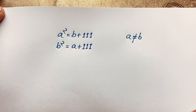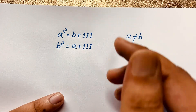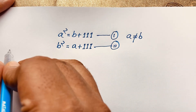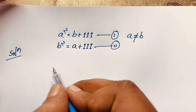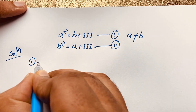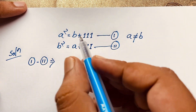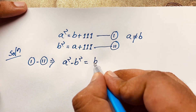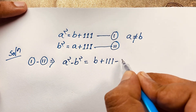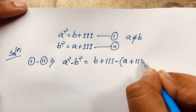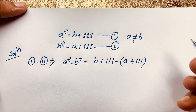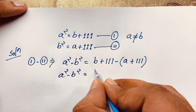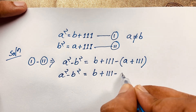So how do we solve this interesting math question? This is our first equation and this is our second equation. For our solution, first of all I subtract both equations — first equation minus second equation. So if I subtract both equations, it will be a squared minus b squared equals b plus 111 minus a plus 111.